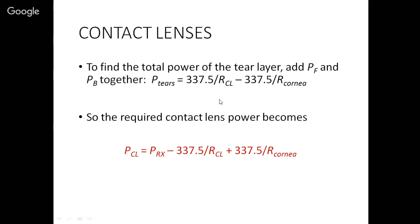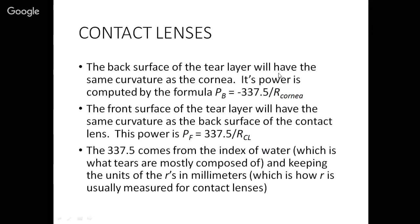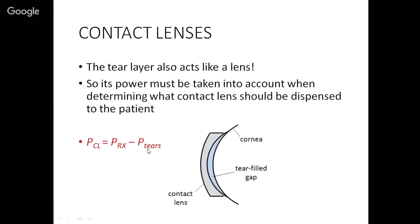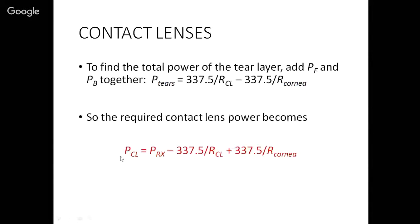So to compute the power of the tears, what do we do? We add those two guys together. We take the back, we take the front, we add them together. That gives us the power of the tears. Now we get a new formula for computing the contact lens power based on what the patient needs, the radius of the contact lens, and the radius of the patient's cornea. Those are all things that the optometrist can measure directly. The power that they need is something that they can figure out. And then the radius of the contact lens, that will be on the box in the contact lens that gets dispensed to the patient.